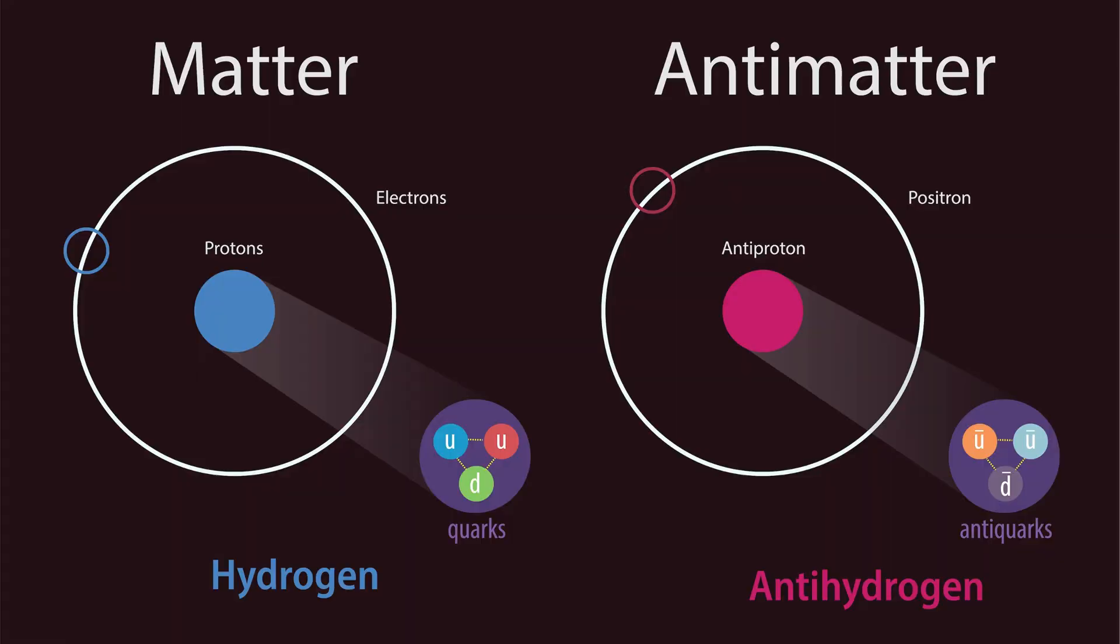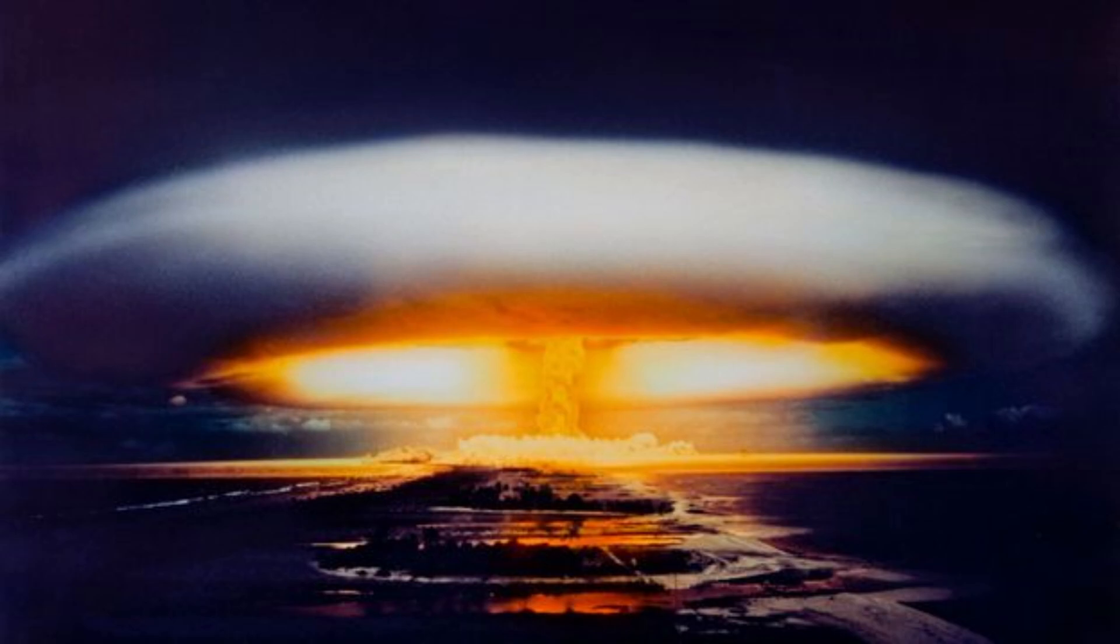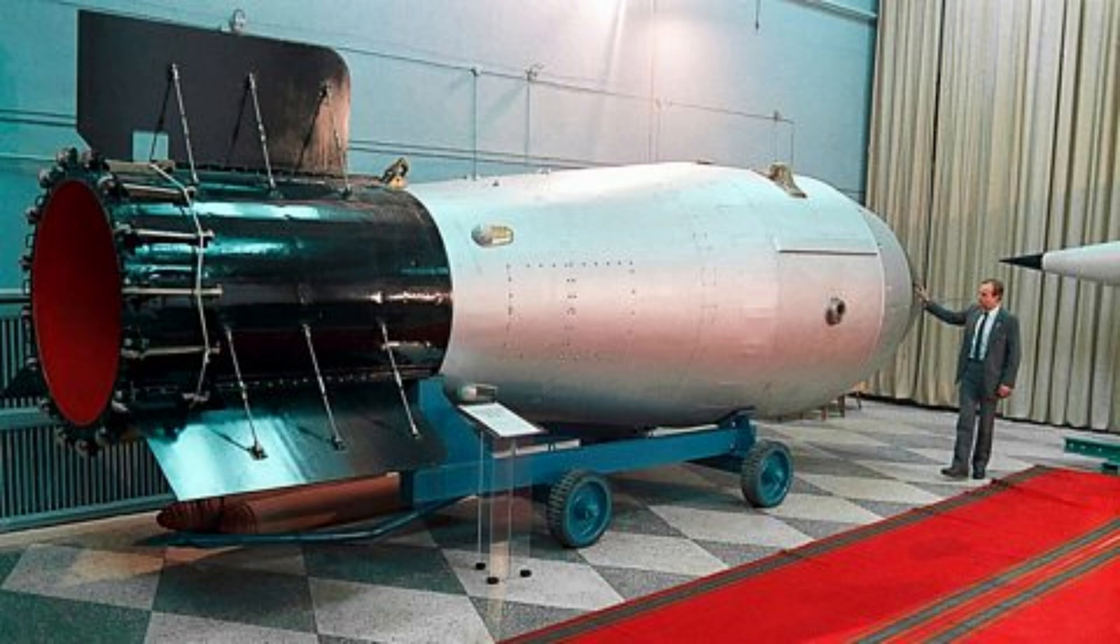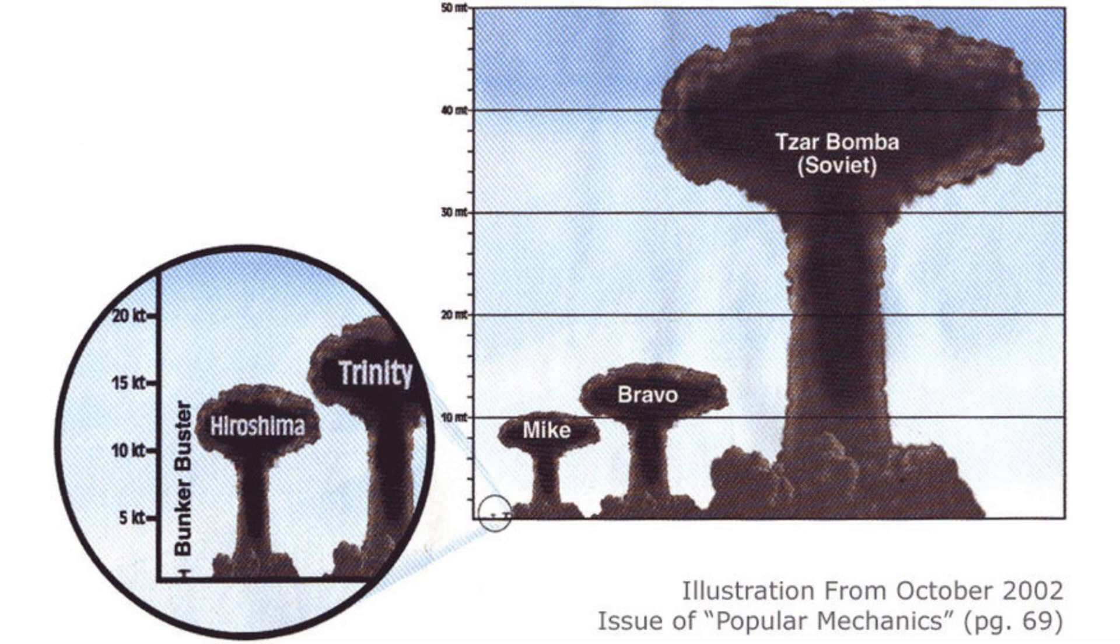The reaction of one kilogram of antimatter with one kilogram of matter would produce 180 petajoules of energy, or the rough equivalent of 43 megatons of TNT, slightly less than the yield of the 27,000 kilogram Tsar Bomba, the largest thermonuclear weapon ever detonated.